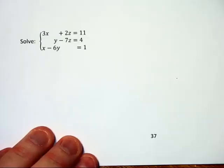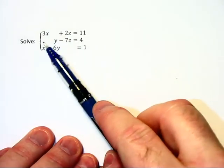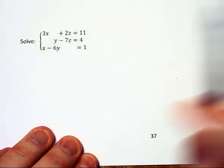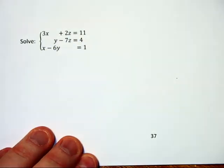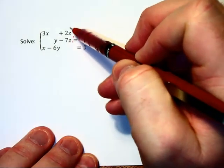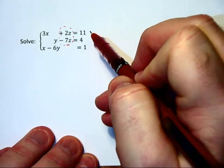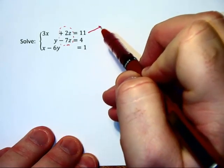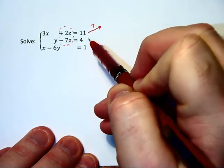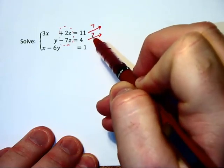In this next problem, we notice that we are missing some coefficients here. But I still need to choose a variable to eliminate. And I'm going to choose to eliminate the z's here. So I'm going to create 14 z's, multiplying that first equation by positive 7, and the second equation by positive 2.